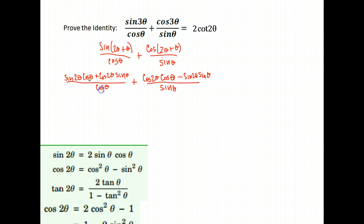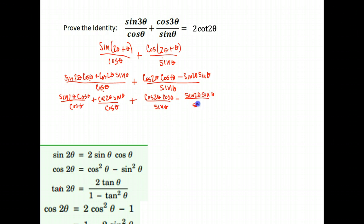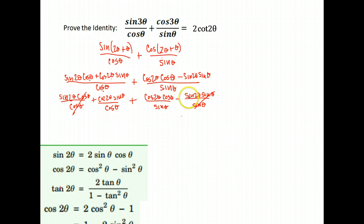Notice we can actually separate this into two fractions. We'd have sine 2θ cosine θ over cosine θ, plus cosine 2θ sine θ over cosine θ. We'll do the same separation for the second part. Here we have a cosine θ and a cosine θ that cancel, and over here a sine θ over sine θ that cancels. That leaves us with a sine 2θ minus sine 2θ, which is zero — so those terms are gone.